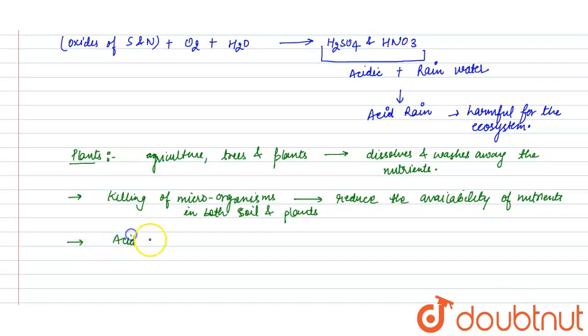Acid rain releases toxic substances like aluminum into soil, which makes trees unable to pull water from the soil.